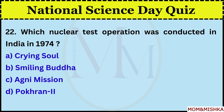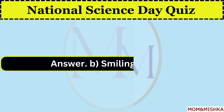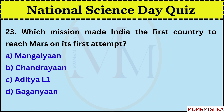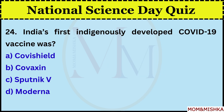Which nuclear test operation was conducted in India in 1974? Smiling Buddha. Which mission made India the first country to reach Mars on its first attempt? Mangalyaan. India's first indigenously developed COVID-19 vaccine was Covaxin.